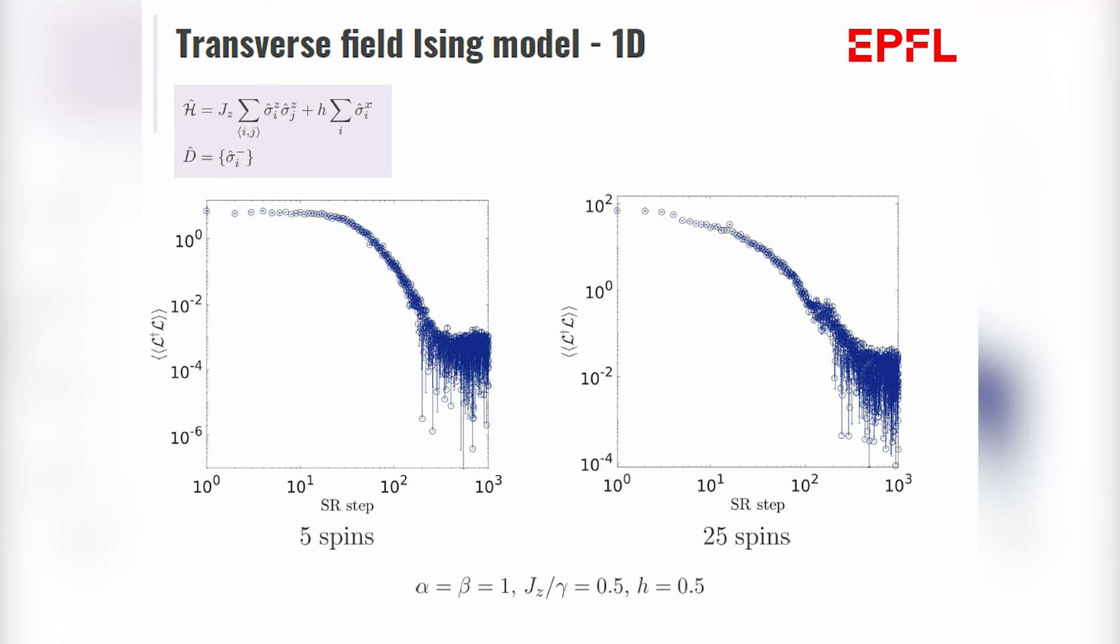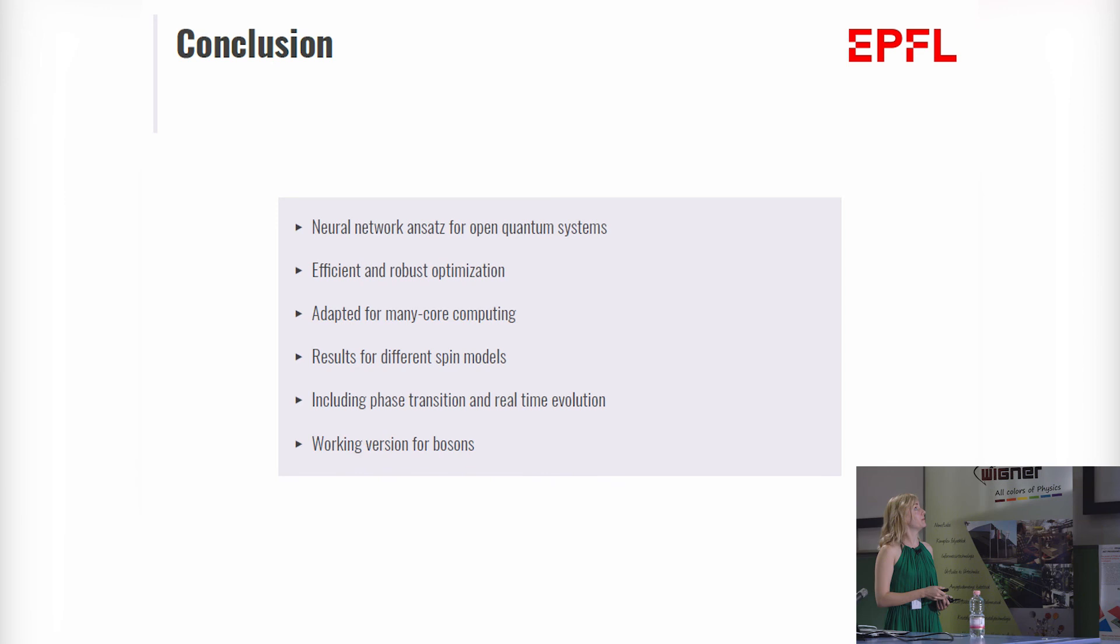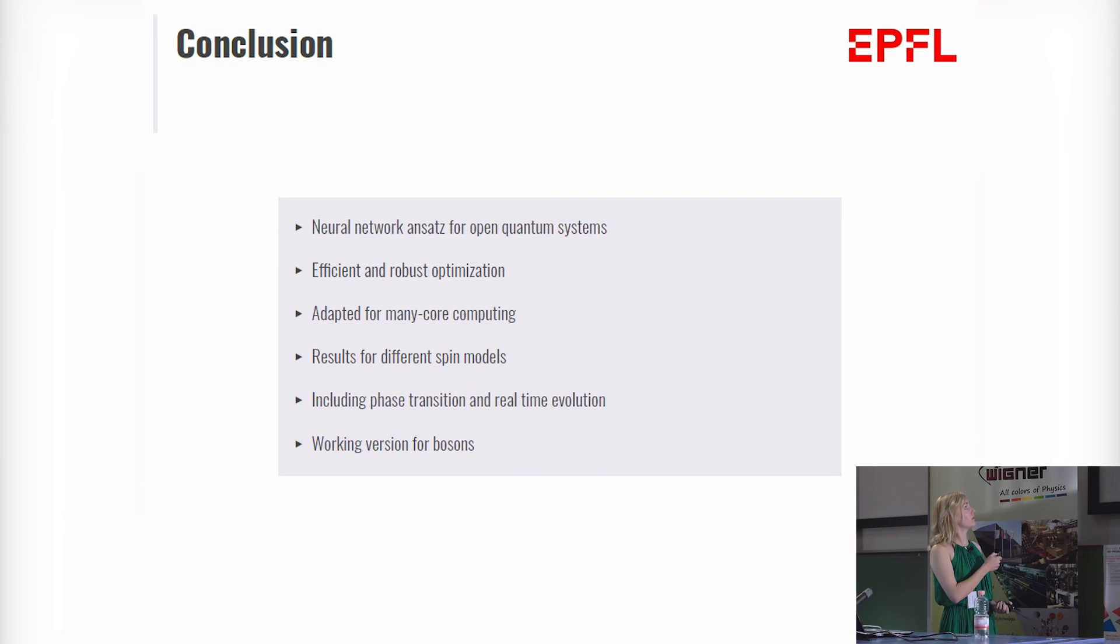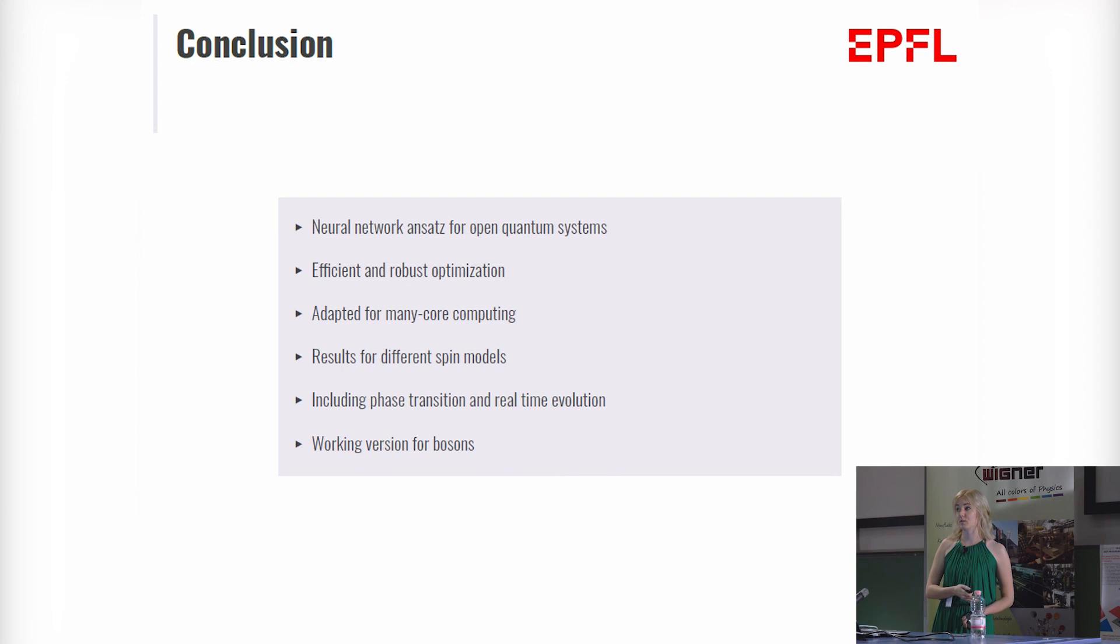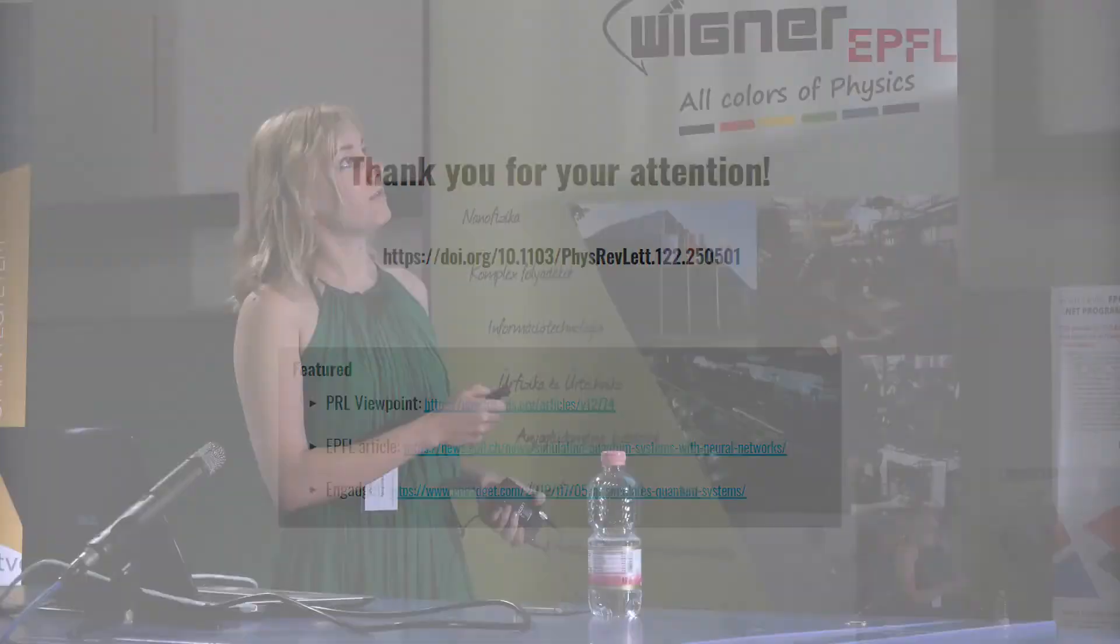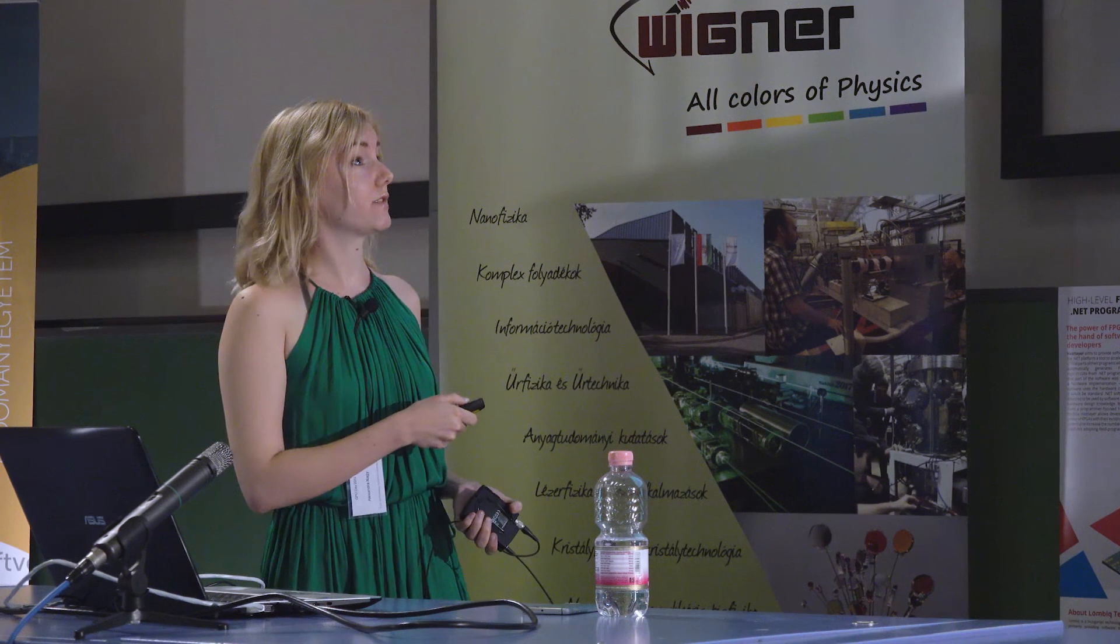And with this, I would like to conclude my talk. I showed you neural network ansatz for open quantum systems which is efficient and robust in optimization. It's well-adopted for many-core computing. And I also showed you some results on different spin models which included phase transitions and real-time evolution. And just to mention, now we have a working version also for bosons, which is basically the same RBM, just we plug in integer values instead of spin halves. And if you are interested in the details which I didn't tell you, you can find our article online and for the reference for the other group's papers, you can check out this PRL viewpoint. And with that, I would like to thank you for your attention.